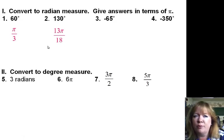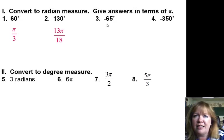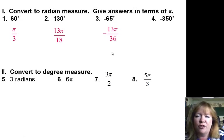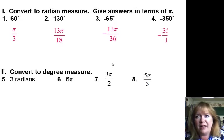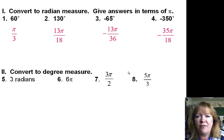Number 2, multiply by pi over 180 and you'll get 13 pi over 18. Negative 65 would reduce to negative 13 pi over 36. And negative 350 would end up to be negative 35 pi over 18.